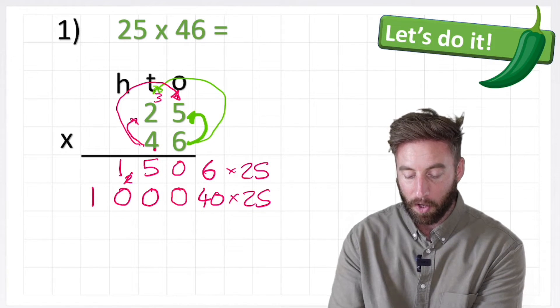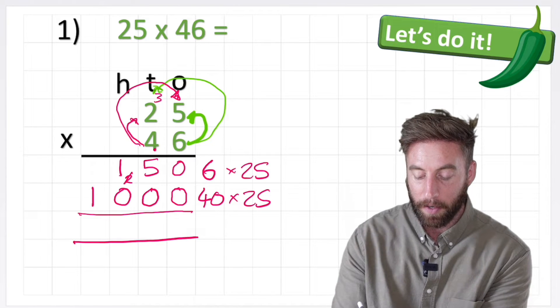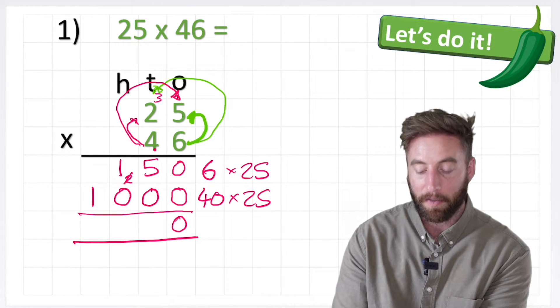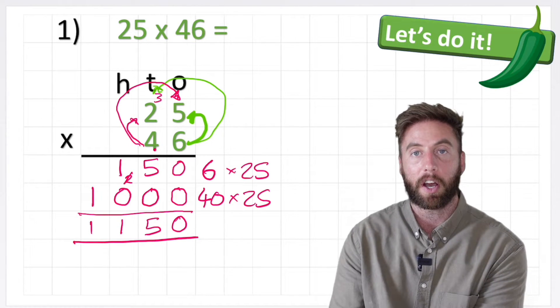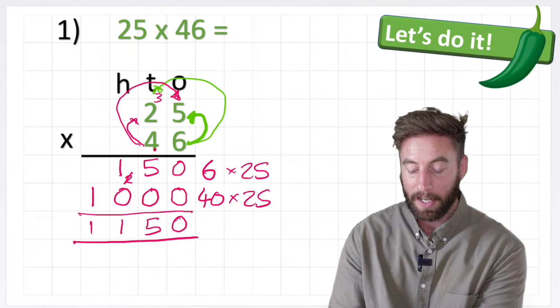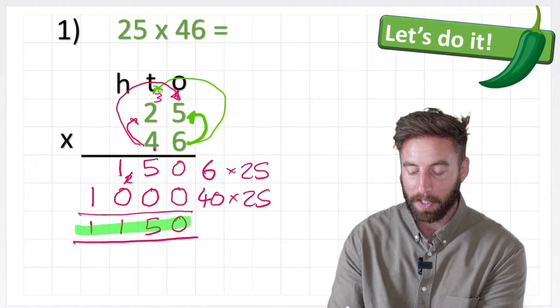Okay, now I'm ready to add up my total answer. So I put my equals line and I can begin. 0 and 0 equals 0. 5 add 0 is 5. 1 add 0 is 1 and 1 on its own is 1. So the answer to 25 times 46 is 1,150. Give myself a big tick.